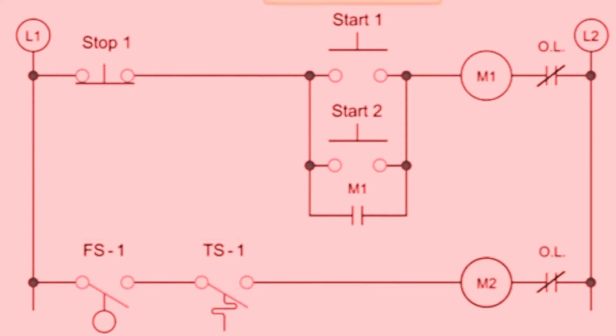Next, let's consider OR logic. This can occur when there are two normally open control functions connected in a parallel arrangement, represented here by two start push buttons.